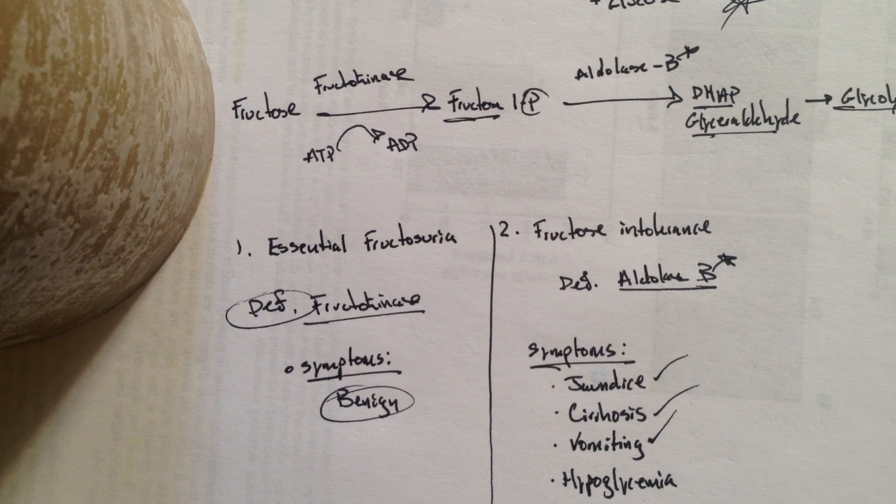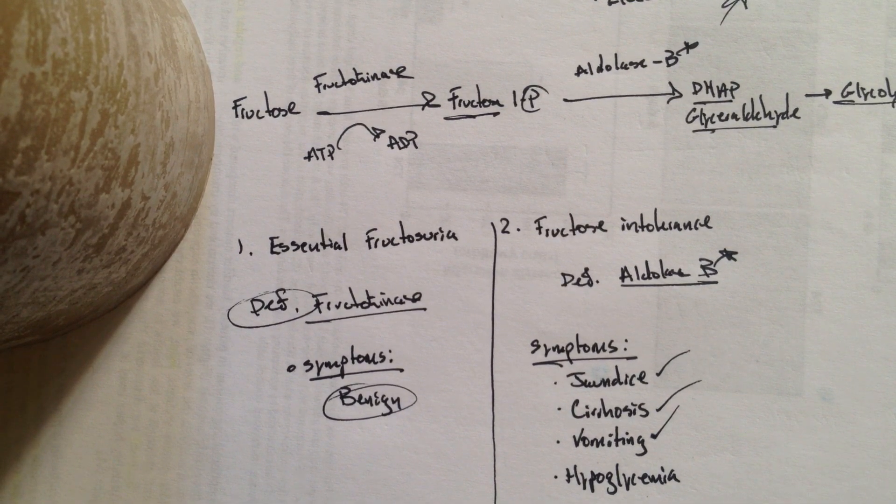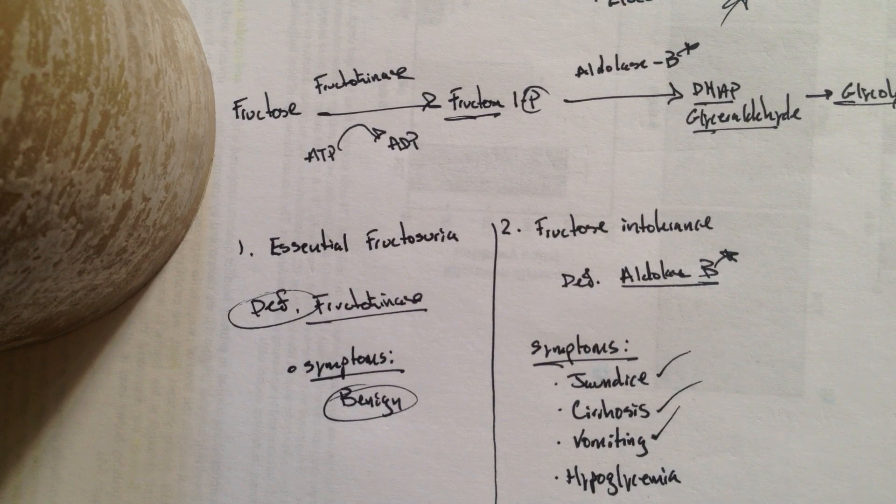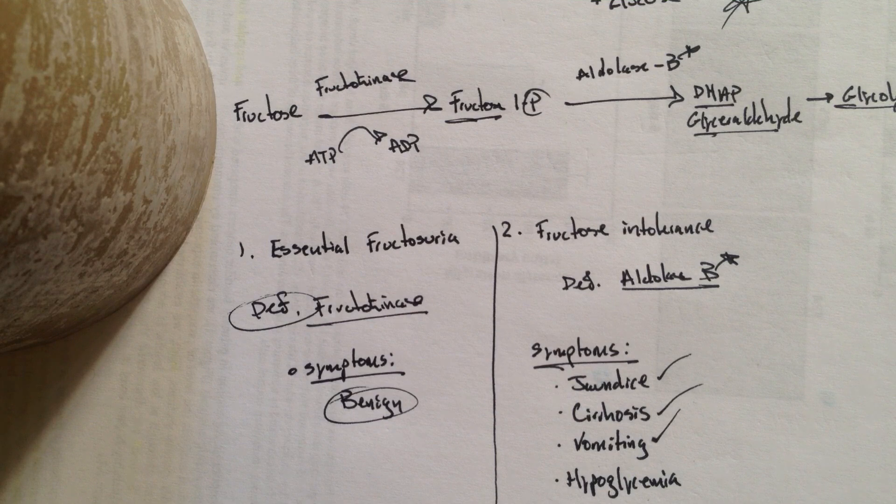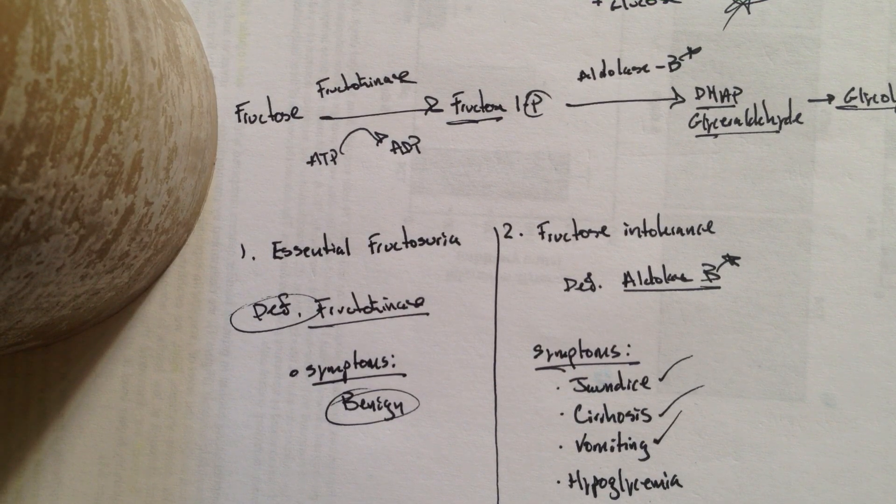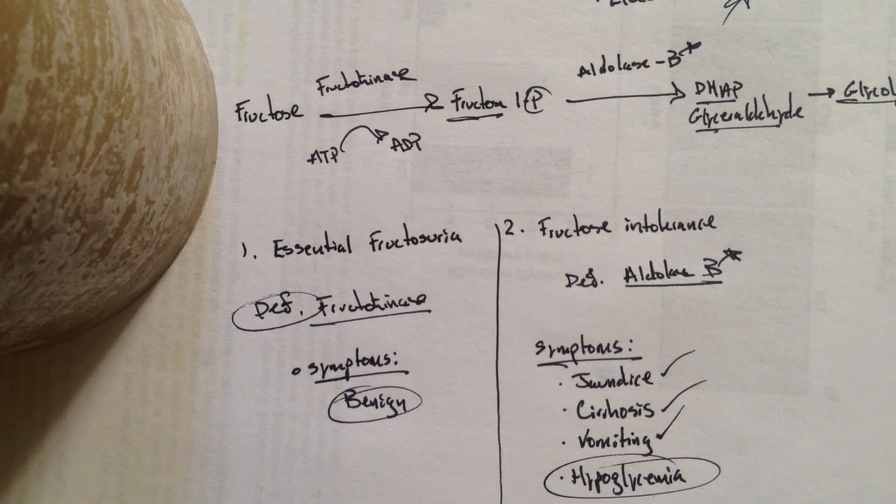And also it's going to cause hypoglycemia. So it's important to note that when the fructose 1-phosphate is trapped in the cells, it's going to decrease the available phosphate, which is going to inhibit glycogenolysis and gluconeogenesis. So you'll have hypoglycemia.